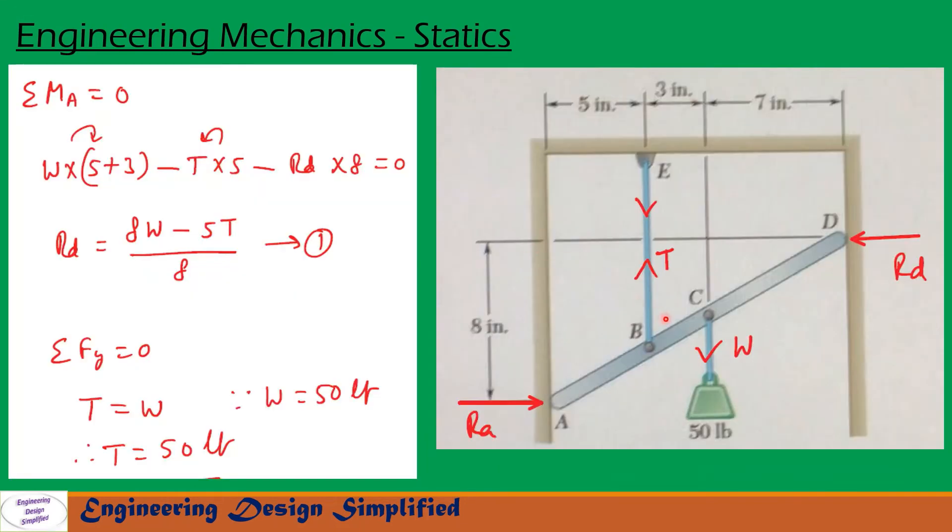First let us see forces and reactions. There is a weight W acting at point C vertically downwards. Due to this weight there will be tension in this cable BE. The direction is shown. There is a reaction at D that will be perpendicular to this wall. There won't be any horizontal reaction because this wall is frictionless. Similarly, this wall is also frictionless and there is a reaction at point A, RA, perpendicular to this wall.